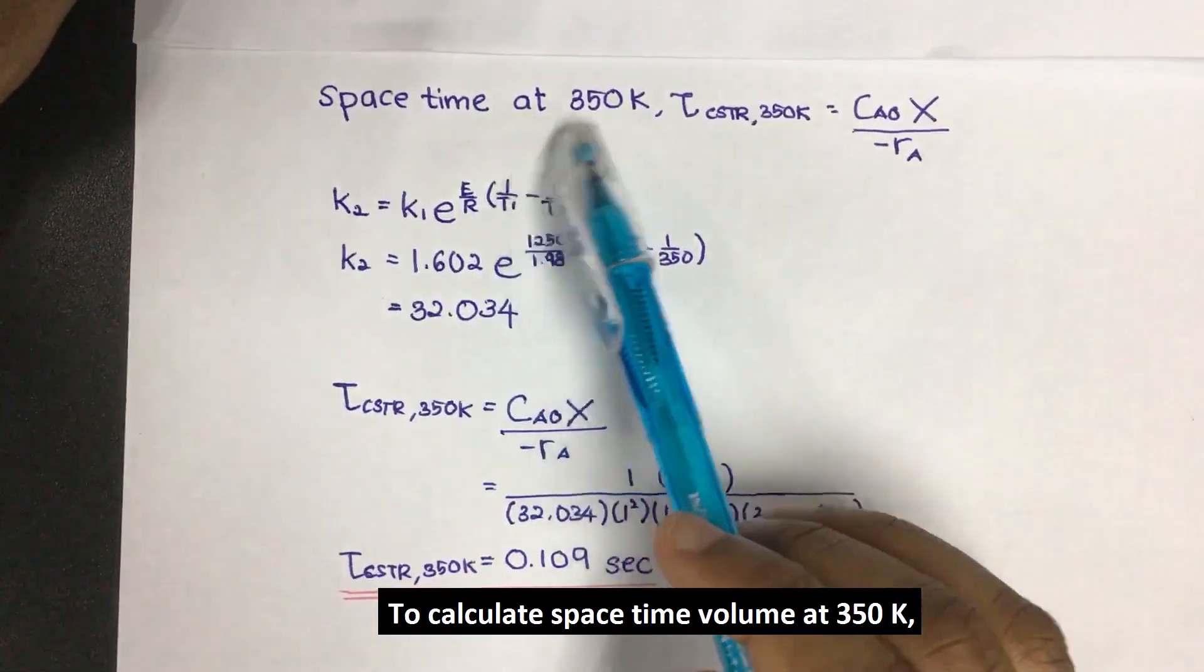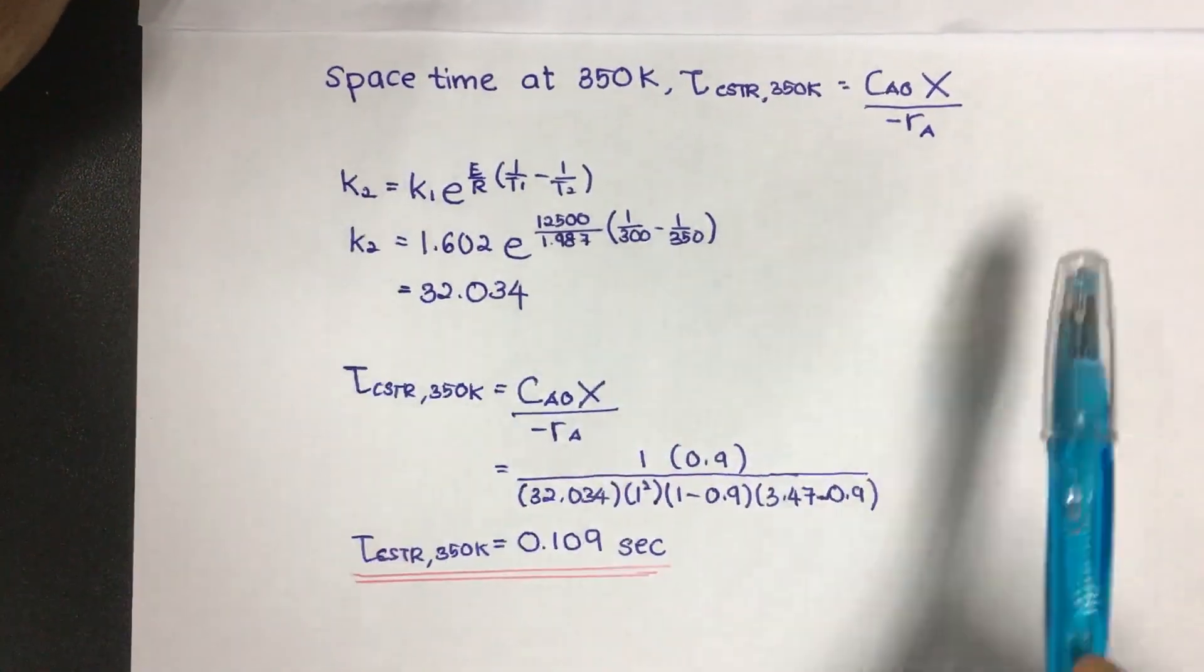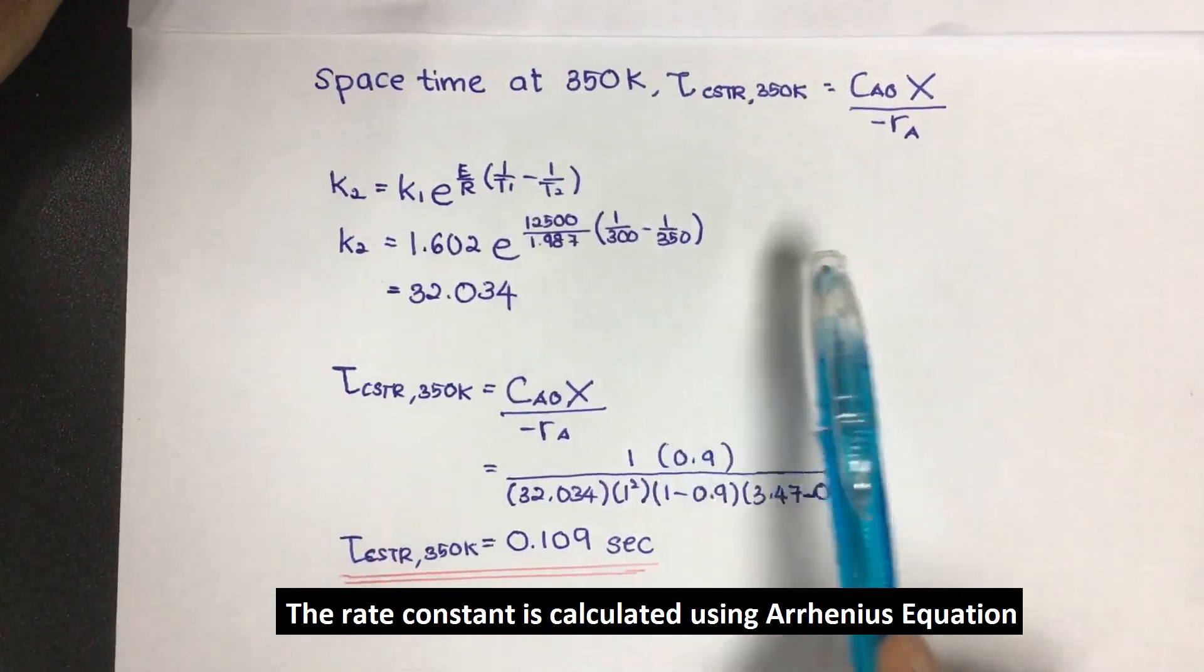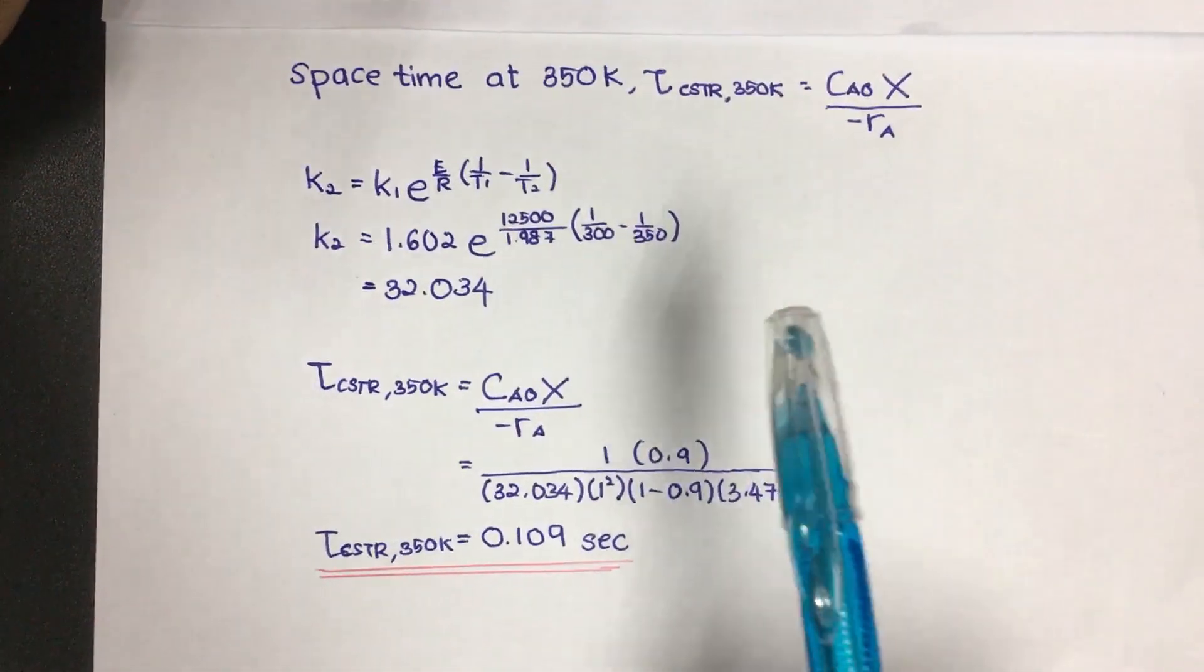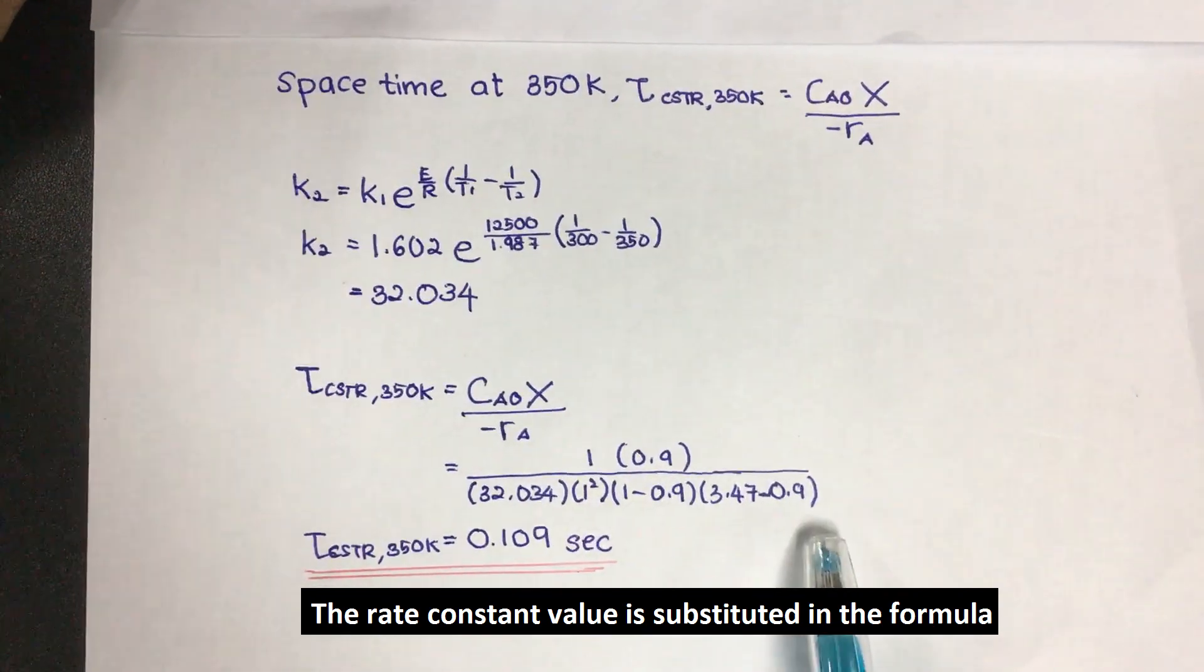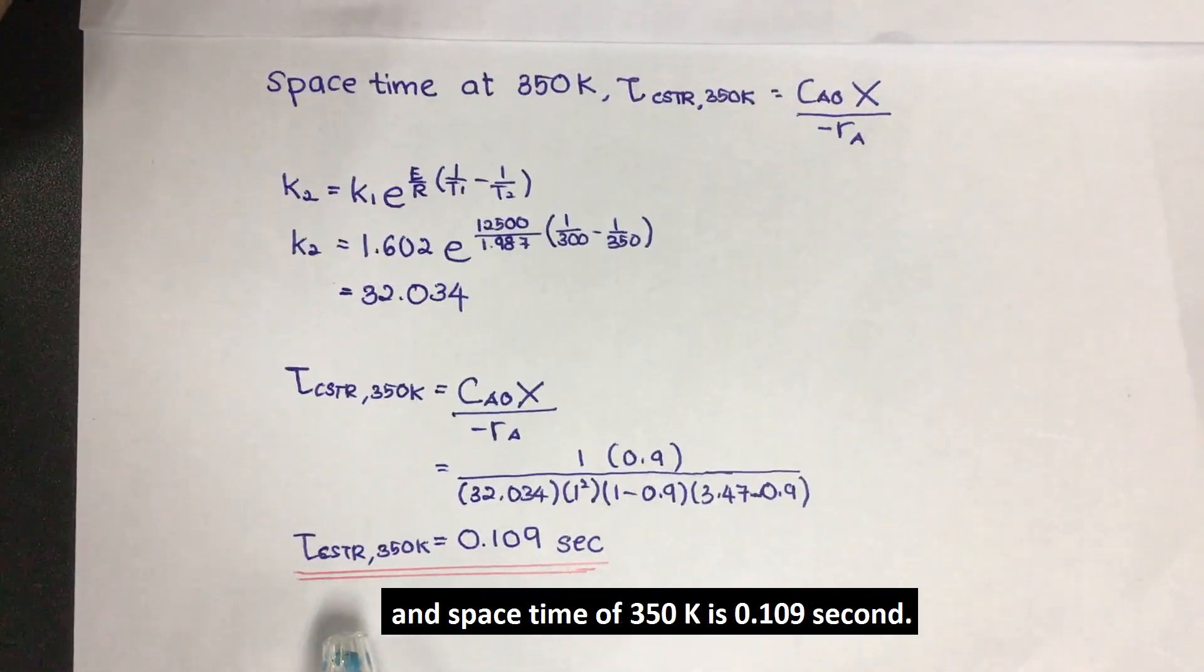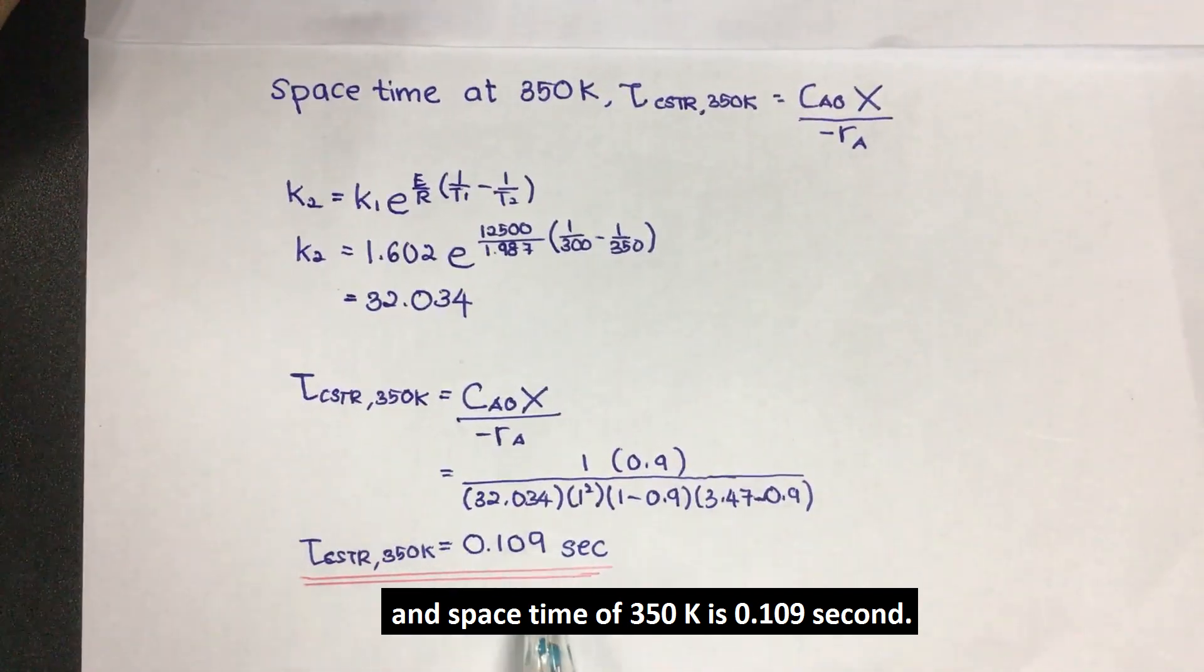To calculate space time at 350 Kelvin, we need to calculate the rate constant at 350 Kelvin using the Arrhenius equation. The rate constant value is substituted in the formula and space time at 350 Kelvin is 0.109 seconds.